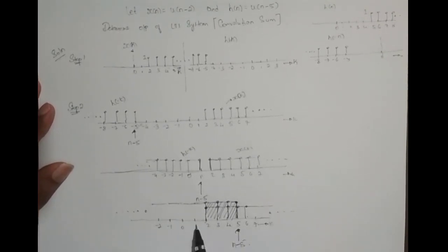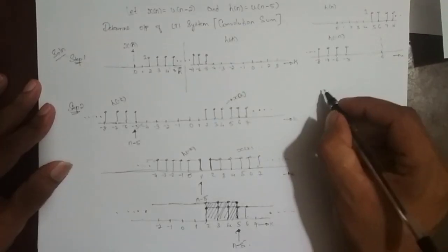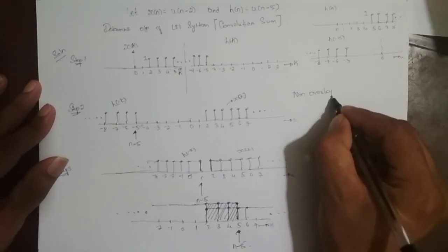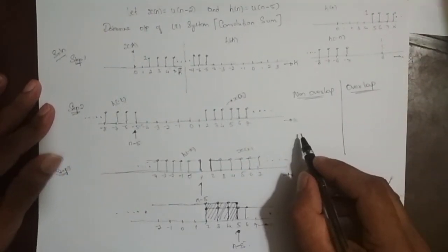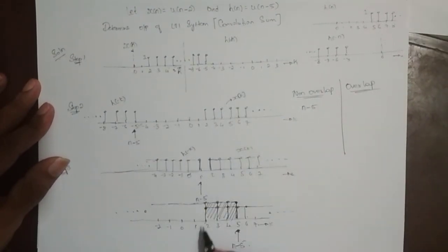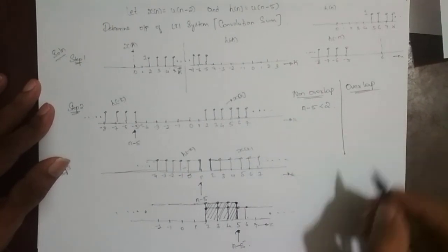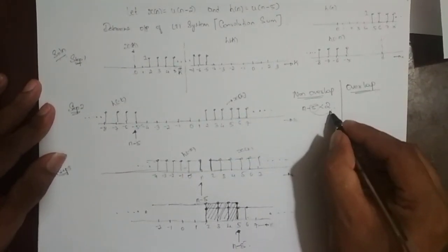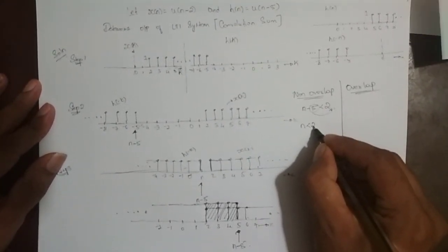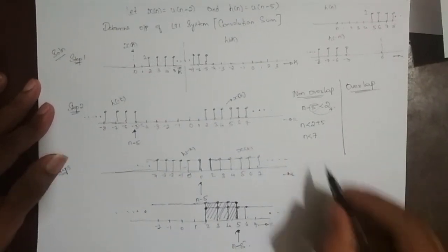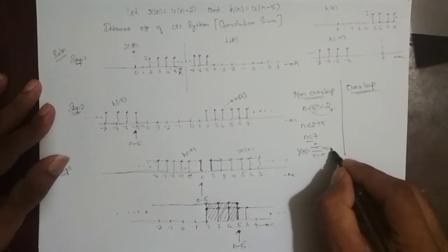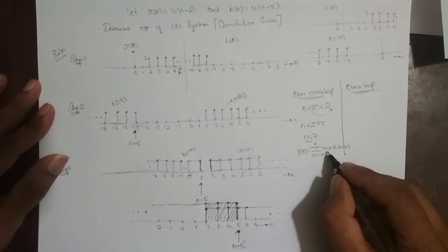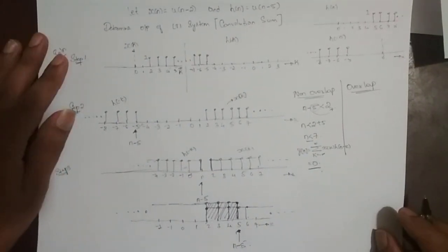From minus infinity till 1 there is no overlap, and overlap starts at 2 and goes to infinity. So the non-overlap region is when n minus 5 is less than 2, which means n is less than 7. Therefore y of n equals the summation of x of k times h of n minus k, which is 0 times 0, equal to 0, since there is no overlap.